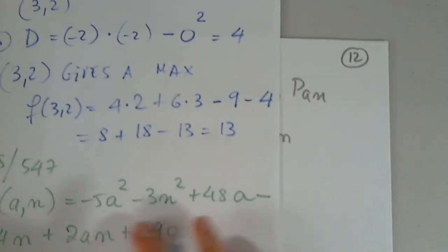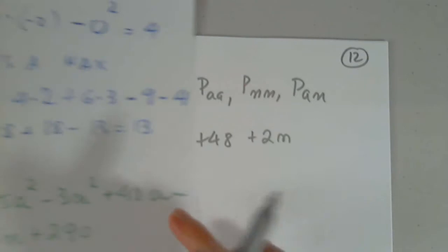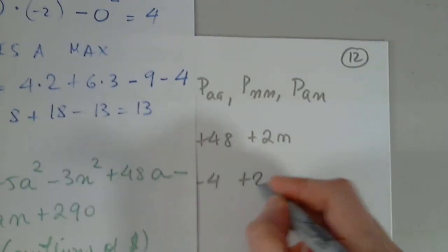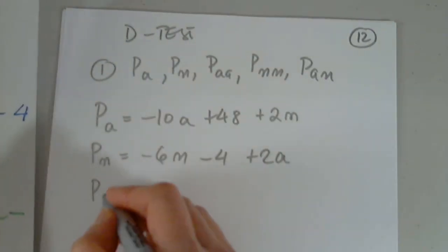So Pn. Okay. Pn. This is gone. This is negative 6n. This is gone. This is minus 4. This is plus 2a. And this is gone.